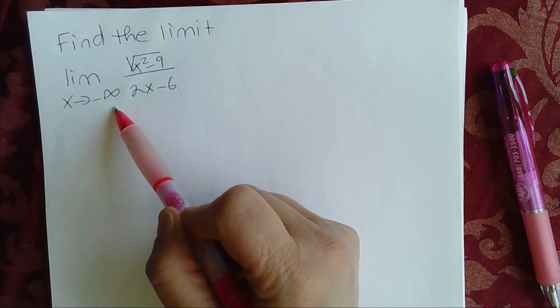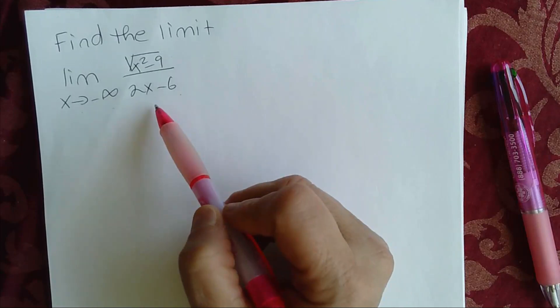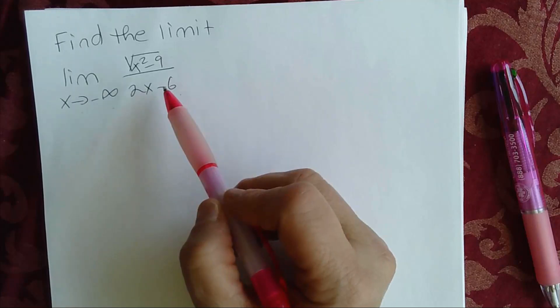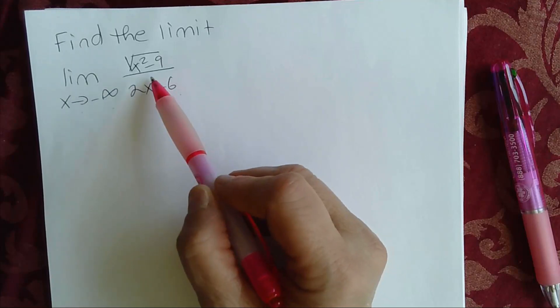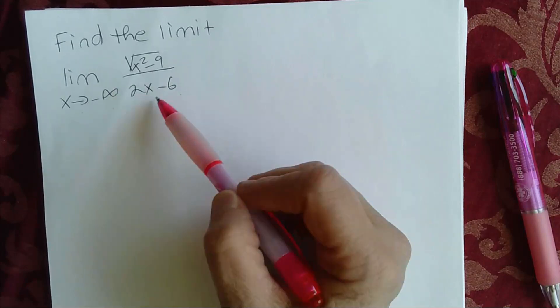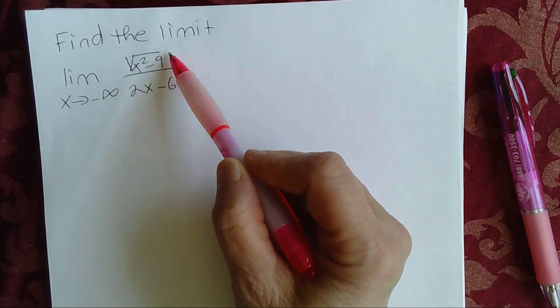What you've done in the past is that you looked at the denominator and you find the variable with the highest power. In this case, the variable with the highest power is x. That's the only variable in the denominator. So what you've done in the past is that you divided both the numerator and the denominator by x.